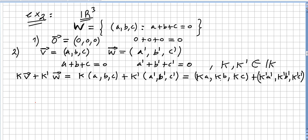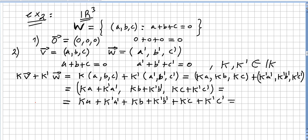So that will be (KA, KB, KC) plus (K'A', K'B', K'C'). So now adding we have (KA + K'A', KB + K'B', KC + K'C'). And this is... so the vectors are such that A plus B plus C... So we can add the components.